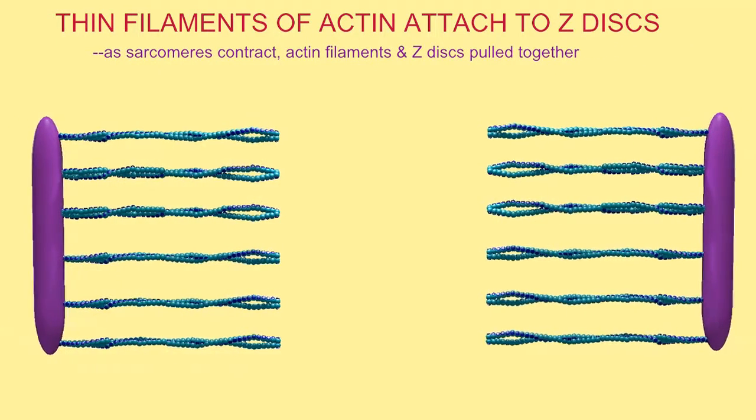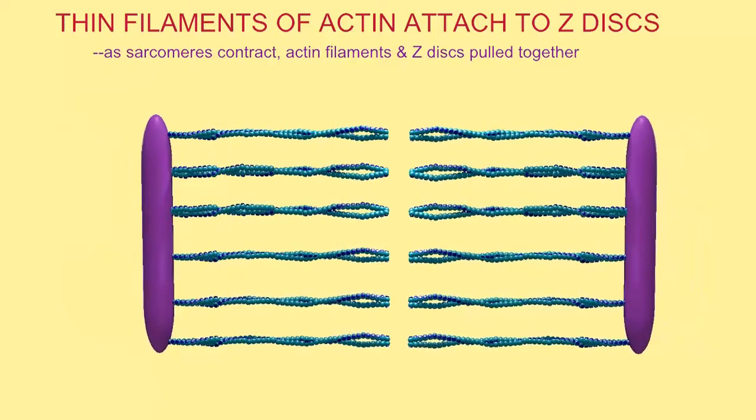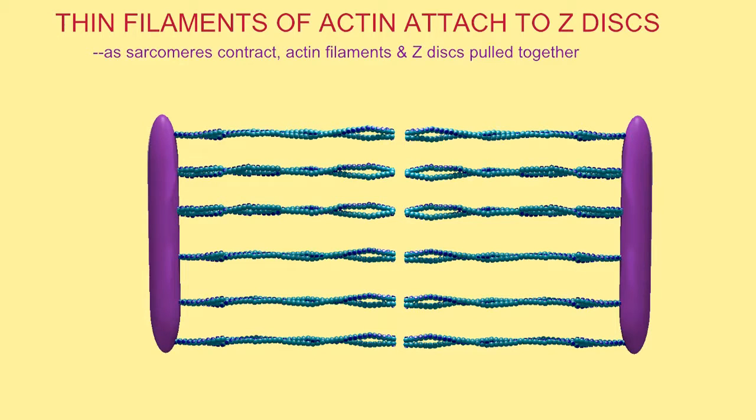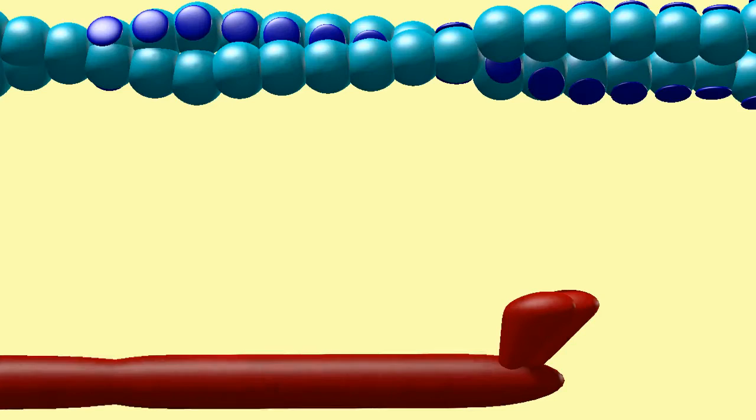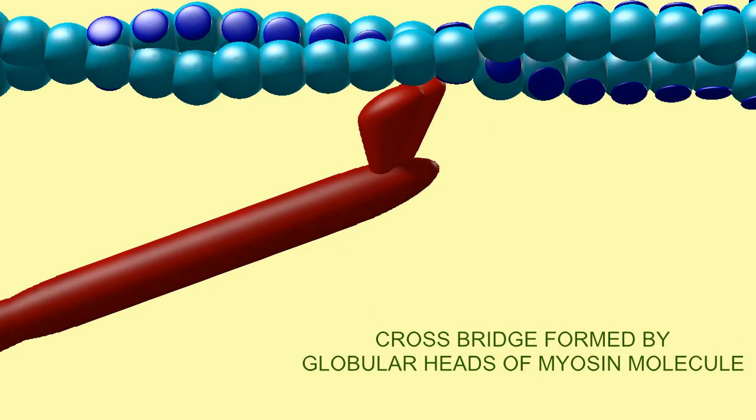There are four steps in the cycle in which the globular heads of myosin attach and pull on the active sites of actin molecules, and thus form cross bridges.